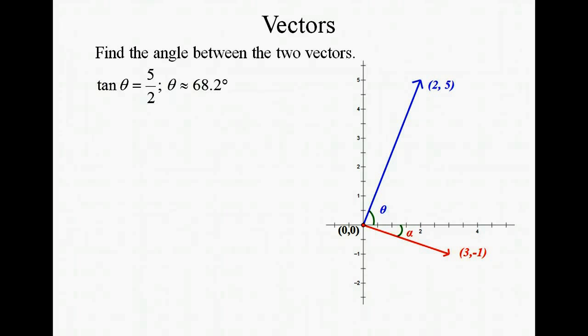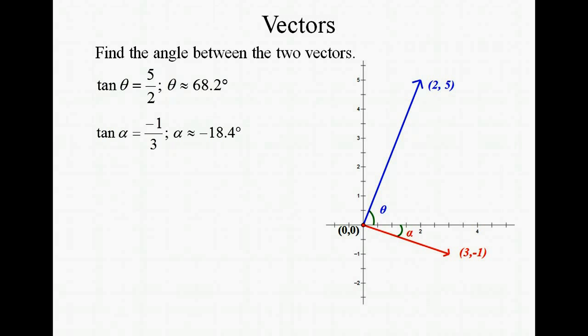Let's now do the same thing for angle alpha. The tangent of alpha is equal to negative 1 over 3, so alpha is approximately negative 18.4 degrees.